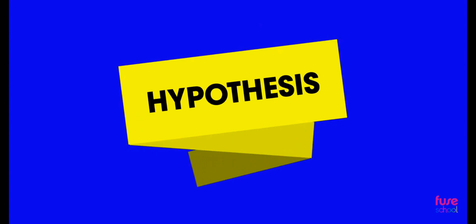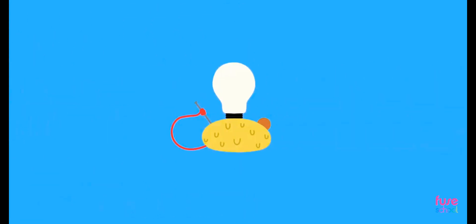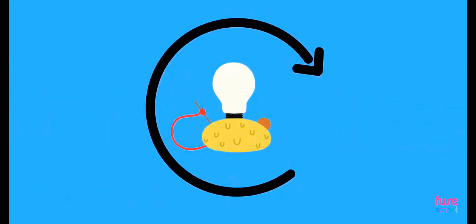Any investigation usually starts with a hypothesis. The variables have to be identified and ways found to control all the variables, except for the variable that is being tested. This goes some way to ensuring that the investigation is not biased. Then the experiment is performed. It may be repeated numerous times in order to increase reliability.